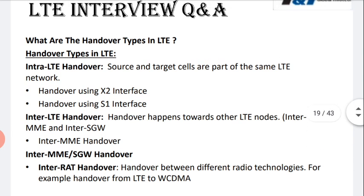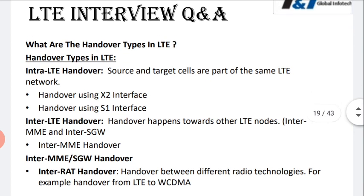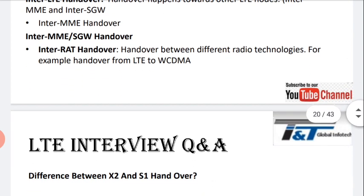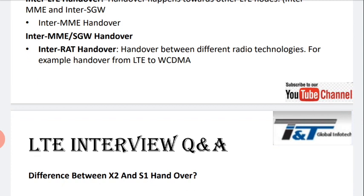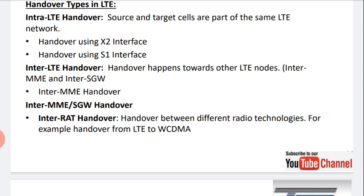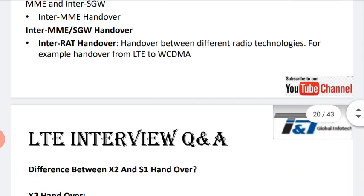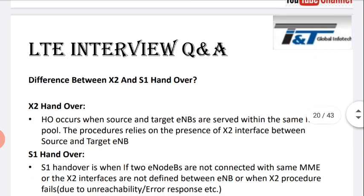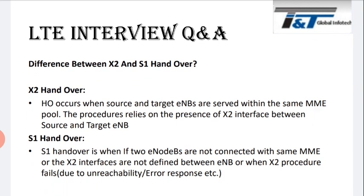The next question is the difference between X2 and S1 handover. X2 handover occurs when the source and target eNodeBs are within the same MME pool and relies on the presence of an X2 interface between them. S1 handover is used when the two eNodeBs are not connected to the same MME, or when no X2 interface is defined between them, or when the X2 procedure fails.